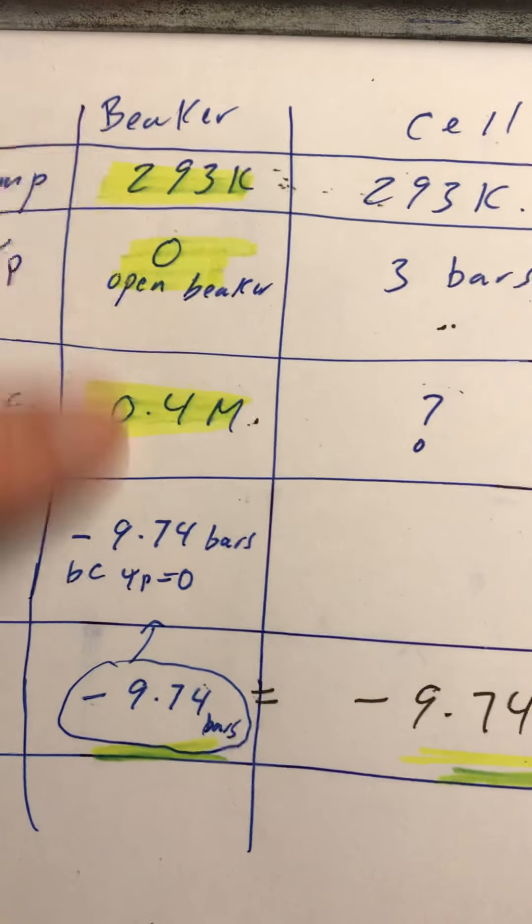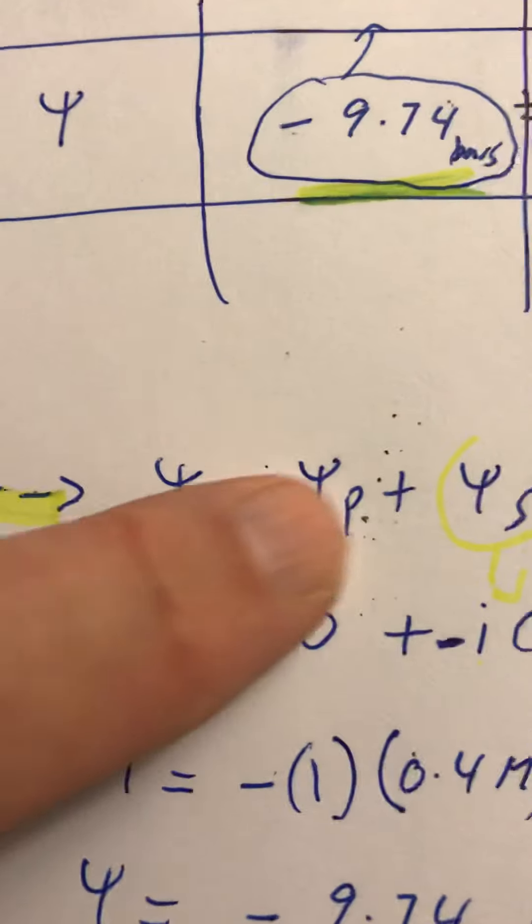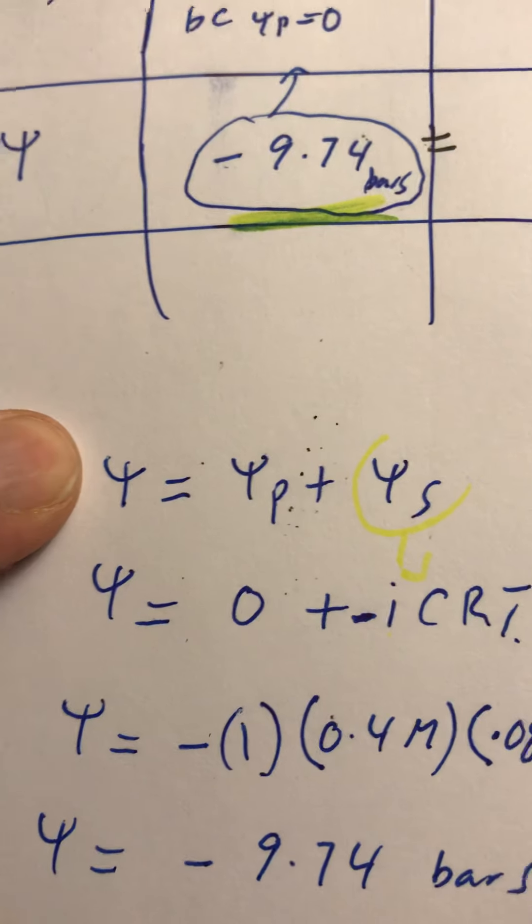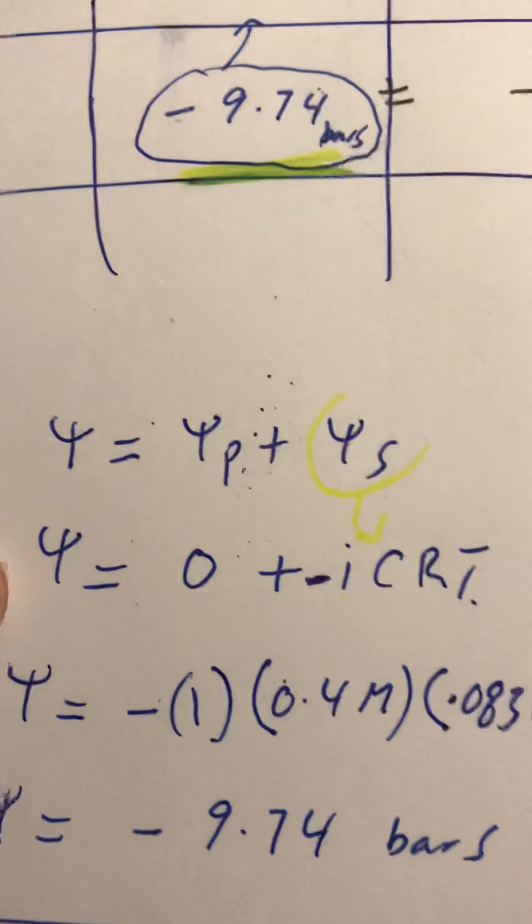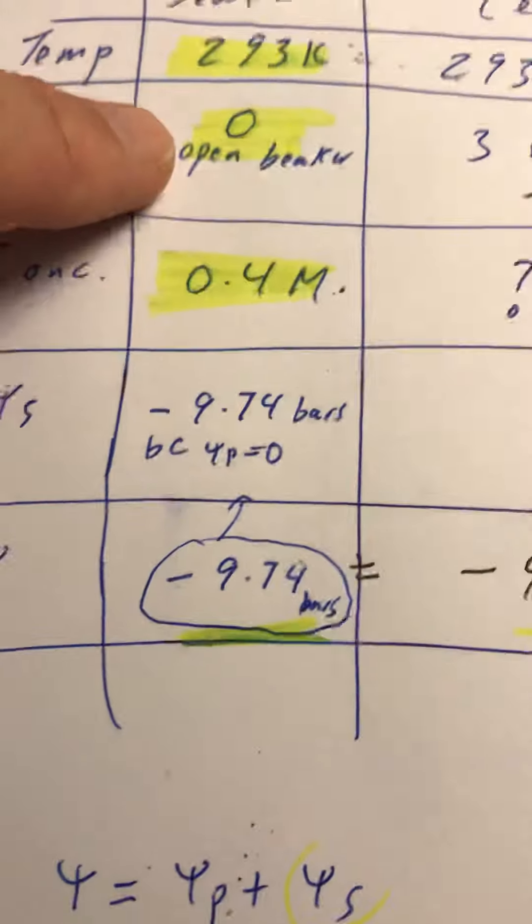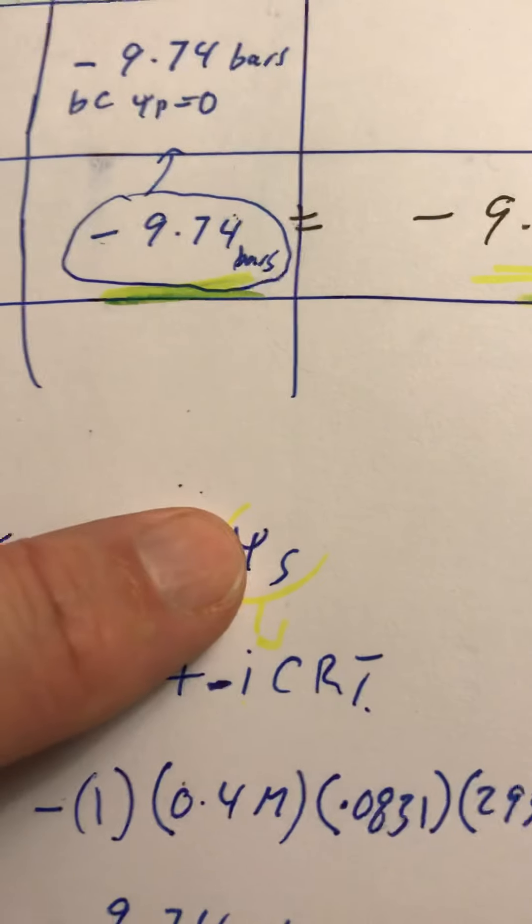I go to the beaker and say psi P plus psi S is the water potential. I know that psi P for the beaker is zero, so psi S is the same as psi water potential.